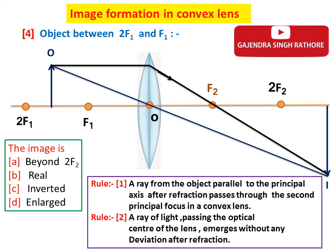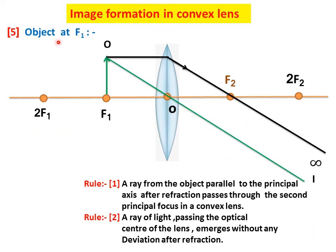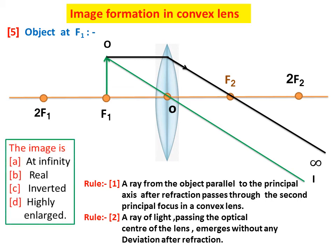Situation number five is when the object is at F1, the first principal focus. A ray parallel to the principal axis after refraction passes through the second principal focus, and a ray through the optical center emerges without any deviation. The two refracted rays are parallel and the image is formed at infinite distance — real, inverted, and highly enlarged.